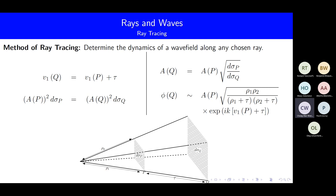Can you explain again what ρ₁ and ρ₂ are? So in 3D, the wavefront that passes through point P is going to be a surface. ρ₁ and ρ₂ represent the radii of curvature of that wavefront. And as it passes through point Q, it will take a similar form, because the rays are not necessarily straight lines.